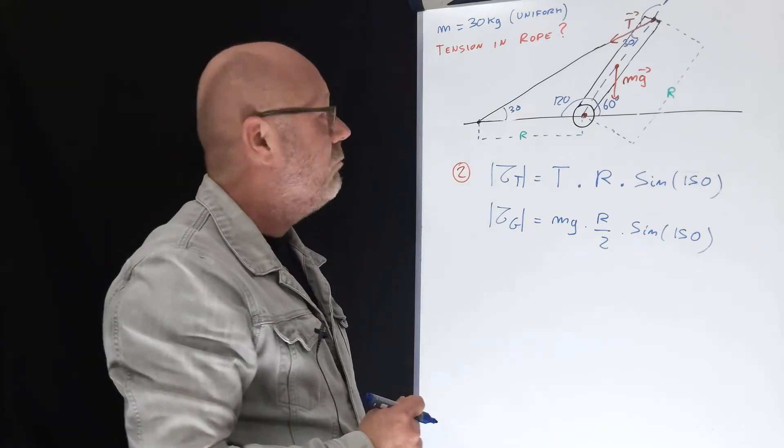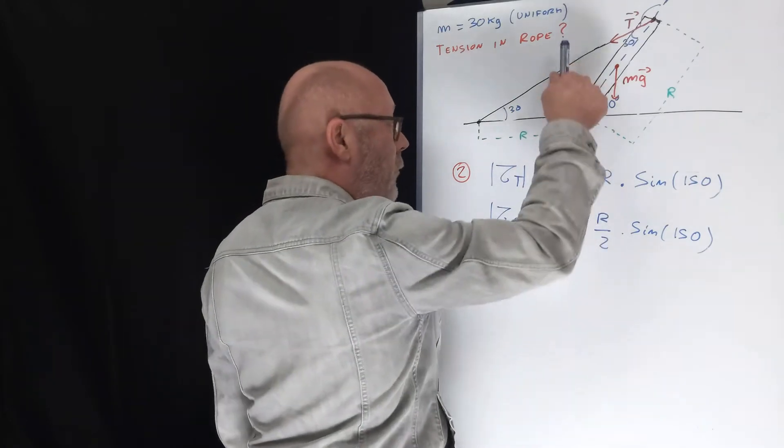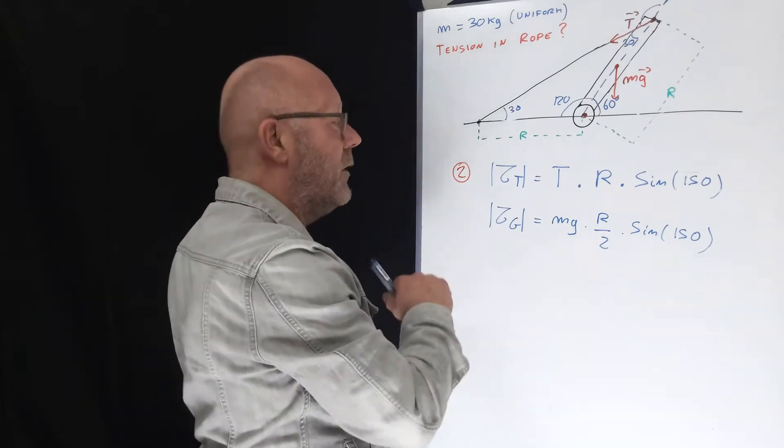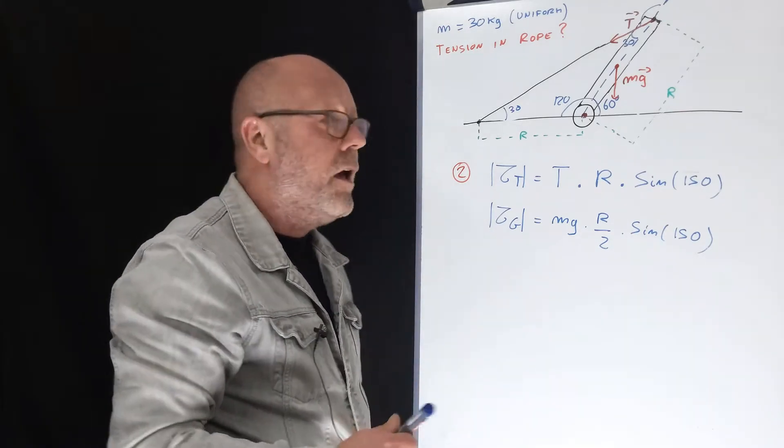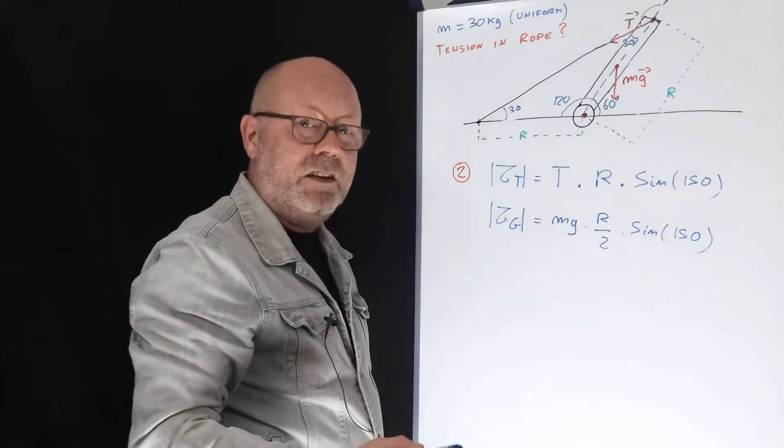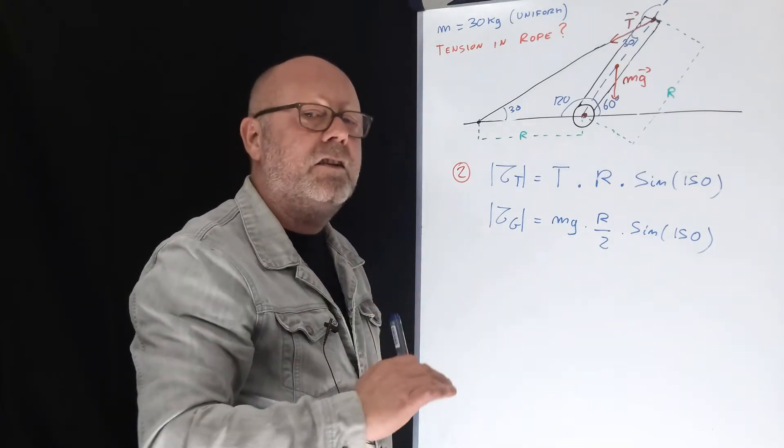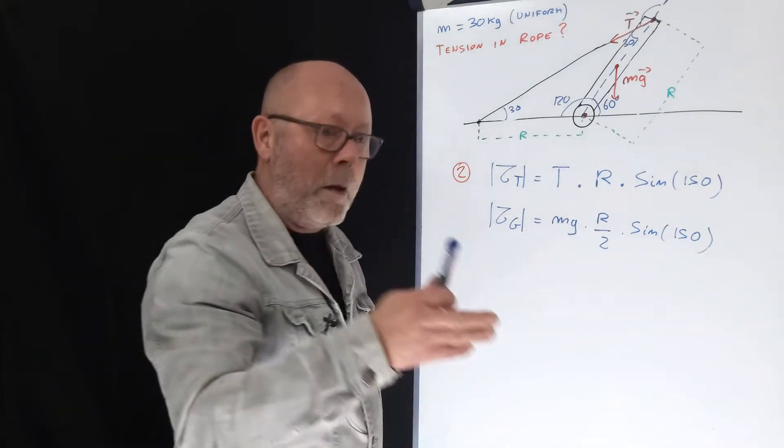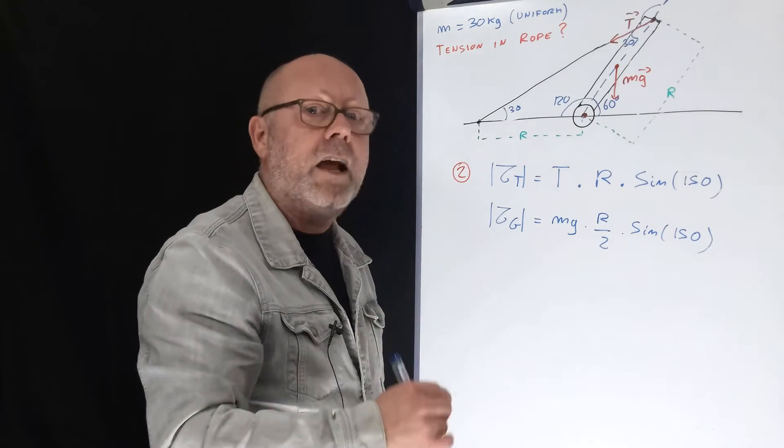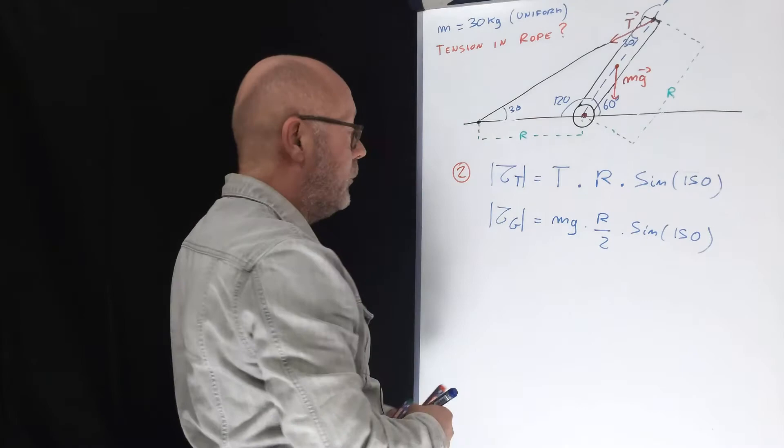So are we done now? No. Now, the plank is pushing on the ground. Therefore, there will be a reaction force of the ground on the plank. But when we're dealing with torques, in that case, we won't care. Because the reaction force will be at the point of contact with the ground, which is also the axis of rotation. Therefore, this force, the reaction force, would be passing by the axis of rotation, meaning that the distance between the point of application of the force and the axis is zero. Therefore, the torque due to reaction would be zero. So we can just deal with these two.